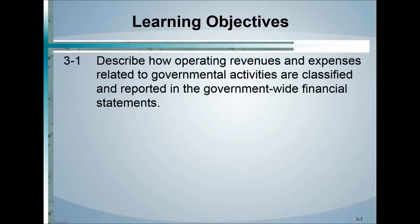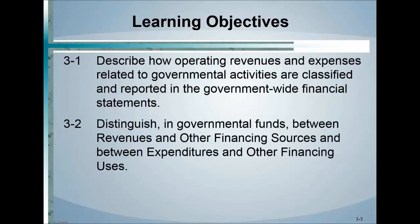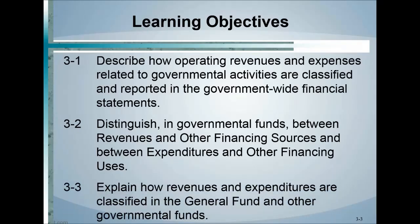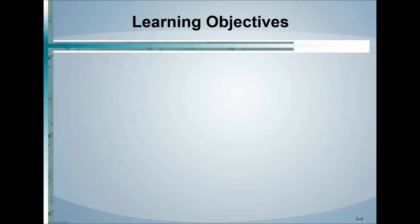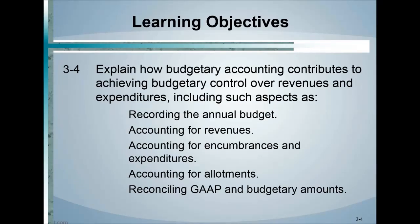Some of our learning objectives: we're going to describe how operating revenues and expenses related to governmental activities are classified and reported in the government-wide financial statements. We'll distinguish between revenues and other financial resources, and between expenditures and other financial uses. We'll also explain how revenues and expenditures are classified in the general fund and other governmental funds, and how budgetary accounting contributes to achieving budgetary control — including recording the annual budget, accounting for revenues, encumbrances, allotments, and reconciling the gap in budgetary amounts.